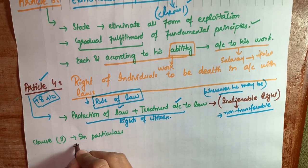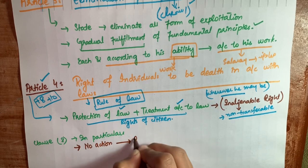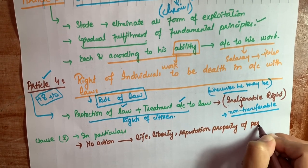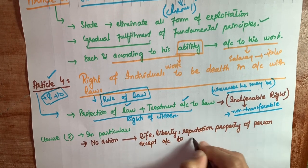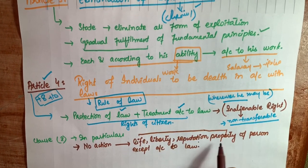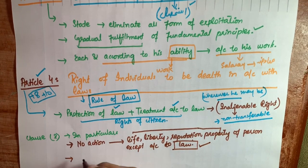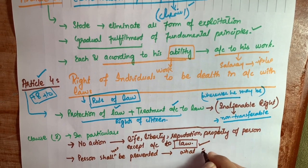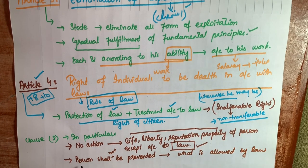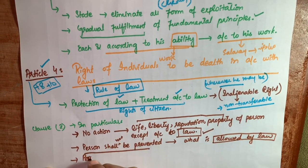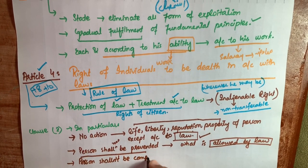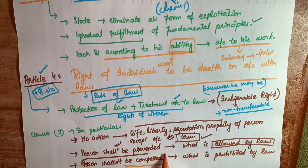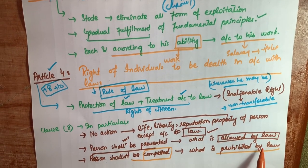Clause 2 mein yeh kehta hai: no action detrimental to life, liberty, body, reputation or property of any person shall be taken except in accordance with law. Clause 3 kehta hai keh no person shall be prevented from doing such act which is not prohibited by law, aur kisi bhi bande ko compel nahi kiya jayega aisa kaam karne ke liye which is prohibited under law.